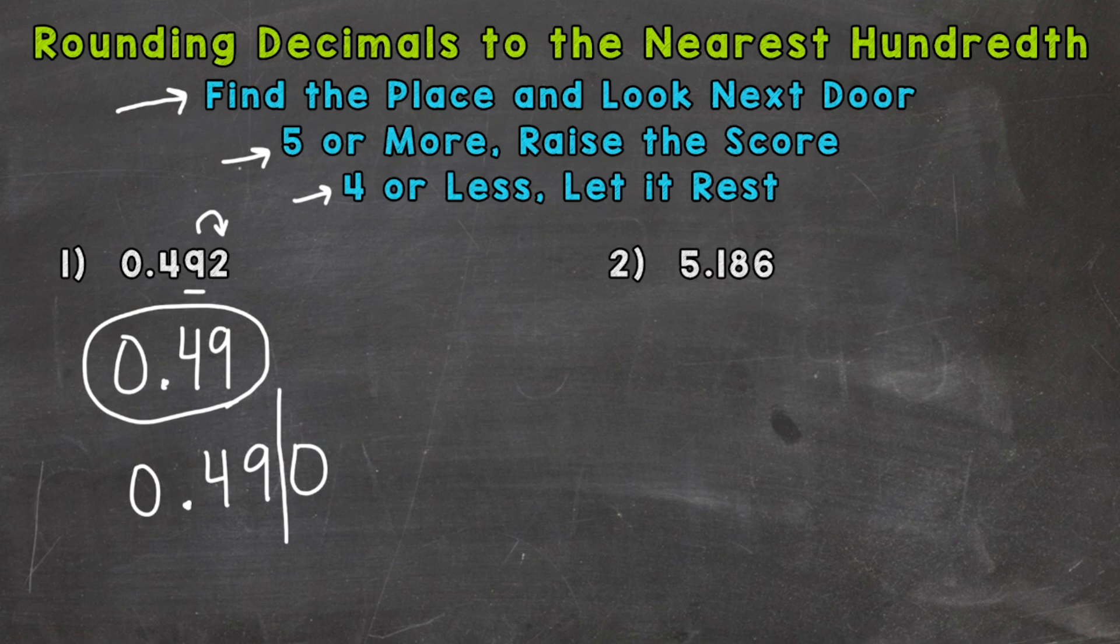So on to number two where we have 5.186. So let's find the hundredths place. Underline it. We have an eight there. Now we need to look next door. Always to the right when rounding.